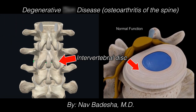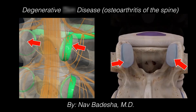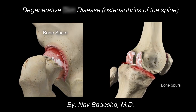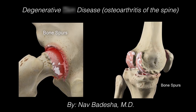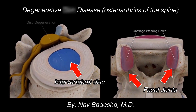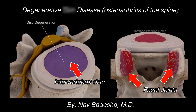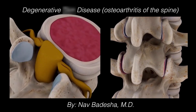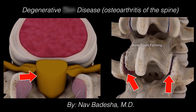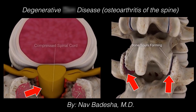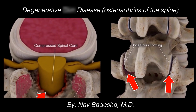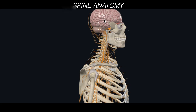Your doctor might use complex terminology to describe arthritis of the spine. By the end of this video, you'll be able to understand the language they use and be able to differentiate between different conditions.